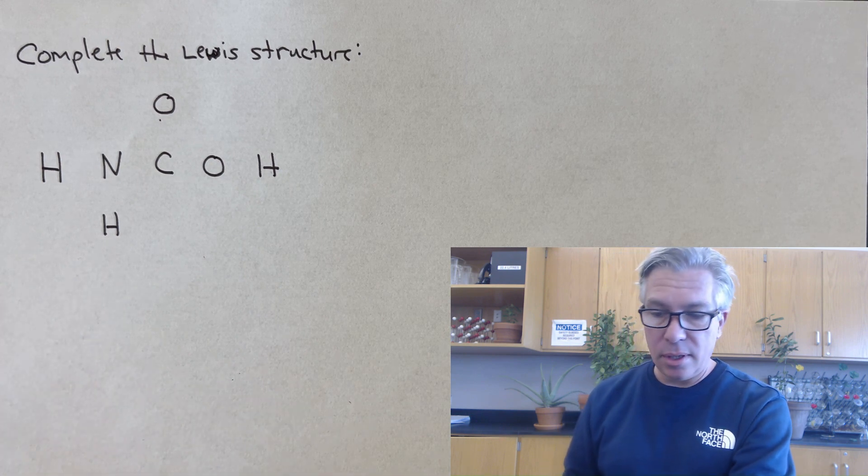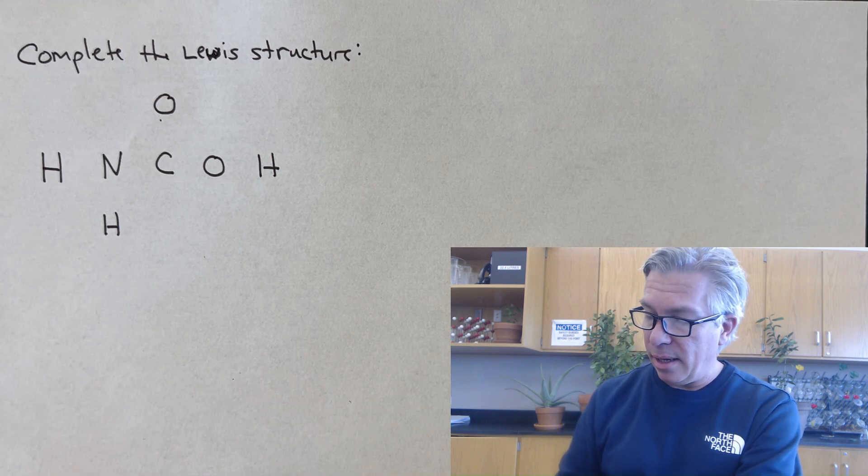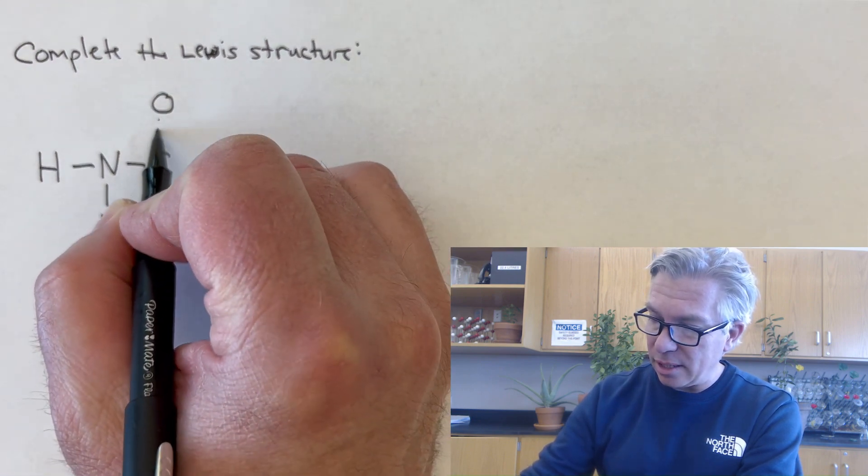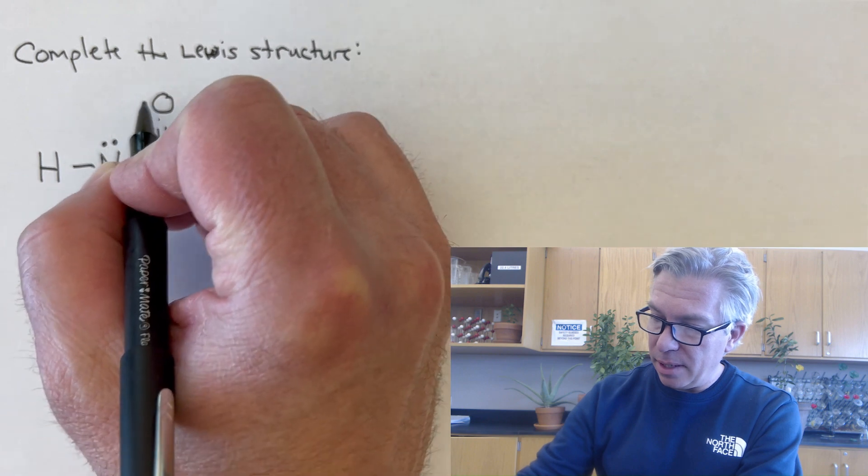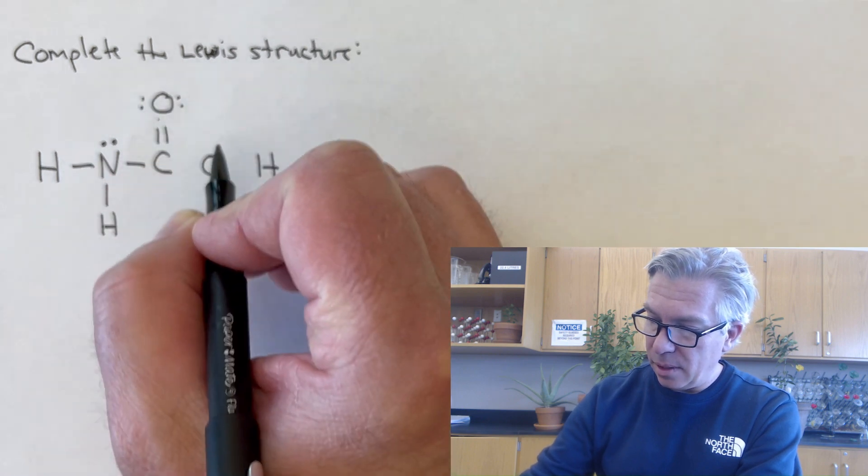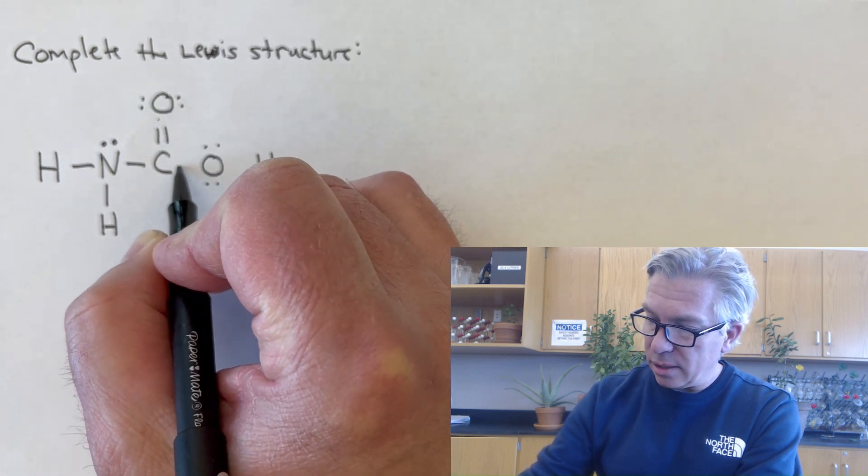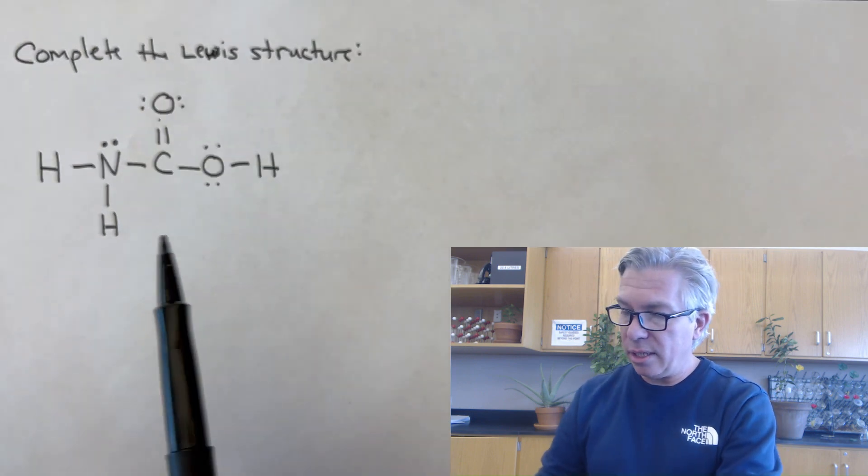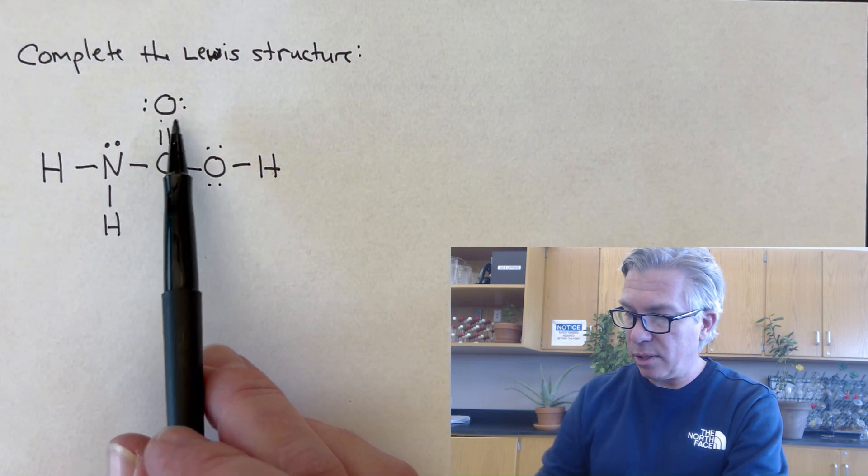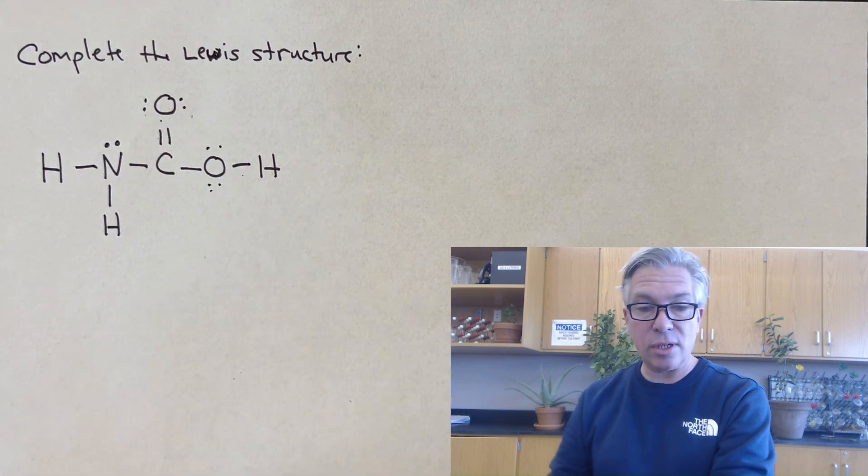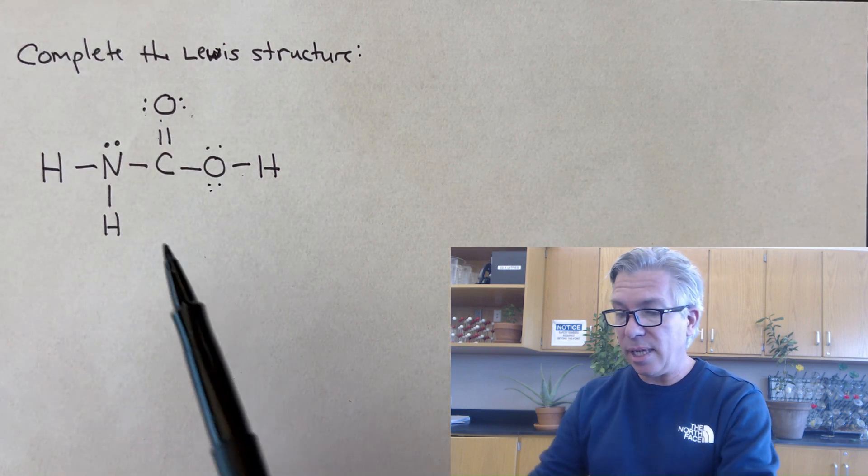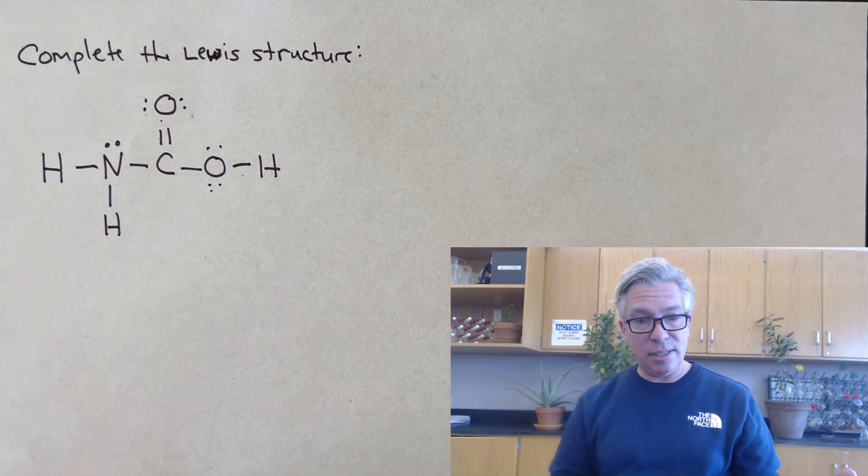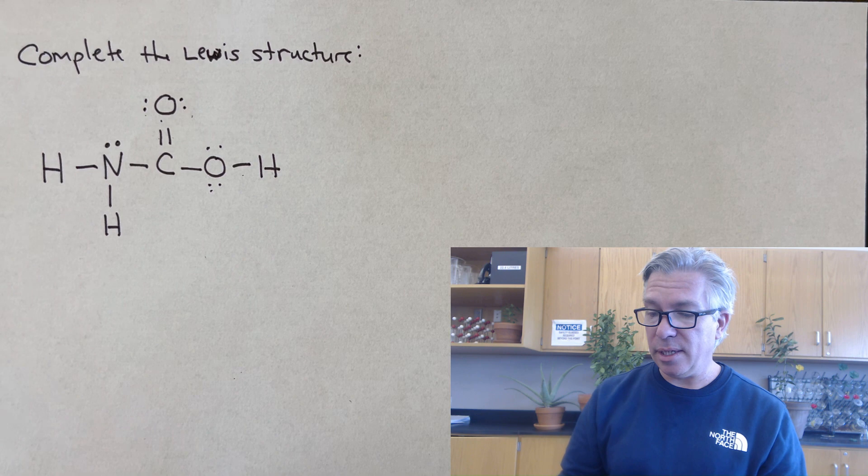Okay. So hopefully you got a chance to try it. And if your molecule ended up looking similar to the last one, but different because it had a nitrogen in it, then congratulations, you figured it out. This molecule needed to have 24 electrons again. But in this case, it had a nitrogen instead of a carbon there and one less hydrogen. So similar, but different. And hopefully you're able to get that.